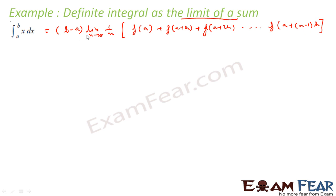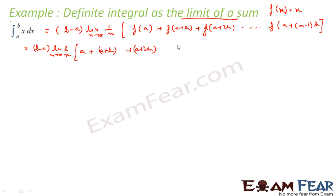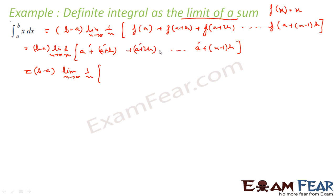So let us put the values. This will be b minus a, limit 1 by n as n tends to infinity. Now f of x is x here, so f of a is a, f of a plus h is a plus h, f of a plus 2h will be a plus 2h, dot dot dot a plus n minus 1 times h. If you see, a appears n times — because the terms go from 0h, 1h, 2h up to n minus 1 times h, that is n times.